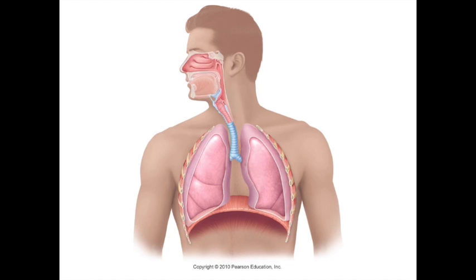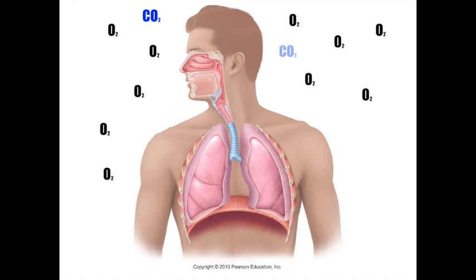The air, gases, enters the mouth or nose, travels down the trachea, through the bronchi, into the bronchioles, and finally ends up in the alveoli. The process of respiration is more concerned with the gases in the air than the air itself. In this case, the gases we are concerned with are carbon dioxide and oxygen.